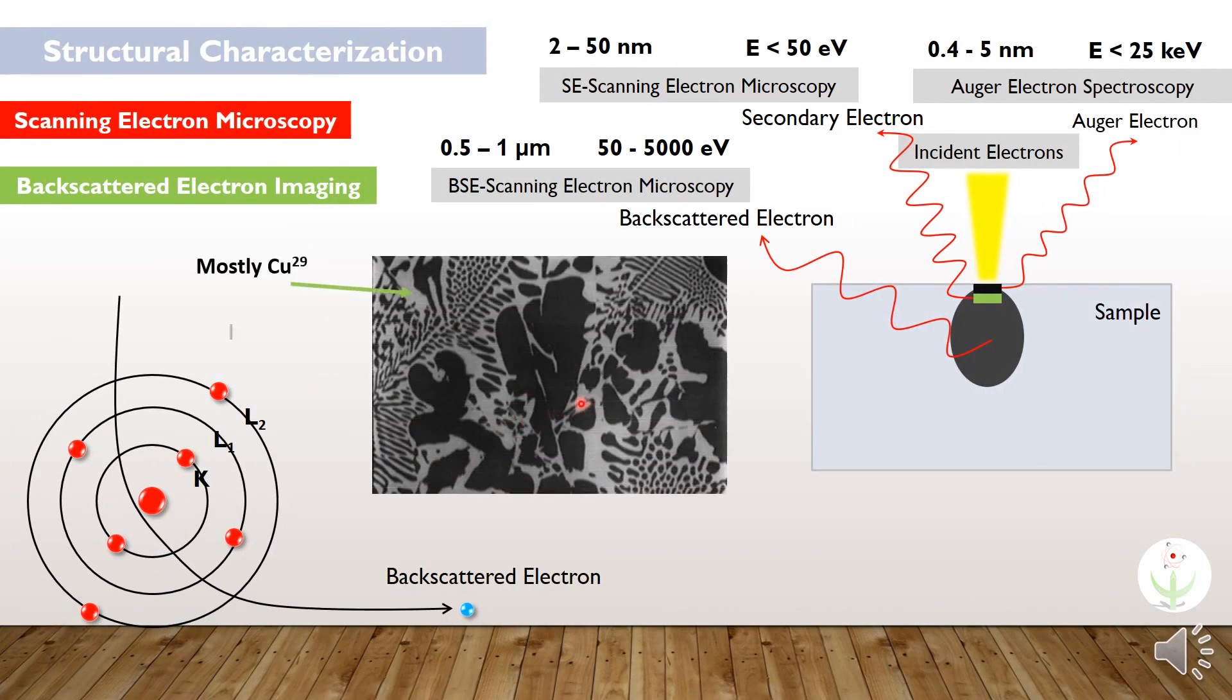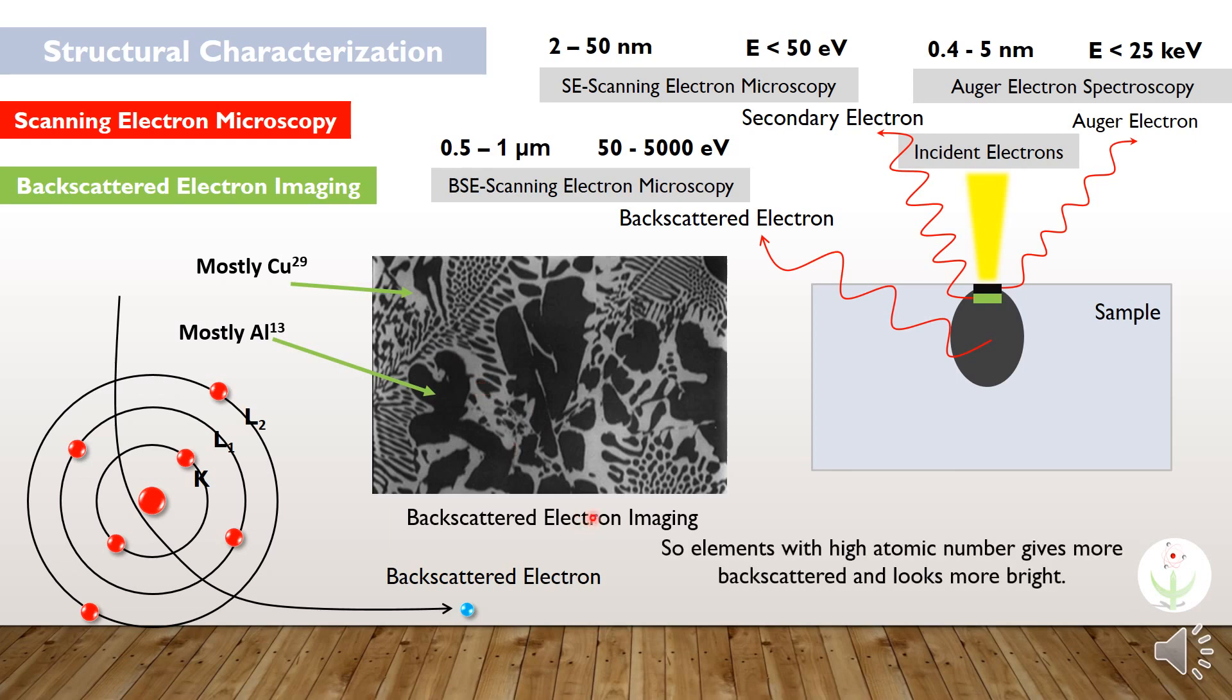This is the microstructure of aluminum copper based alloy. This image is taken from backscattered electron imaging. You can see the dark regions are mostly aluminum, which is lower in atomic number, then compared to bright regions, those have mostly copper having higher atomic number. So, elements with a high atomic number give more backscattered electrons and look more bright.